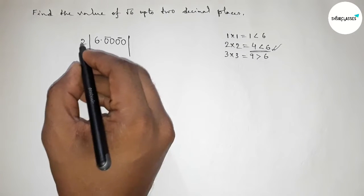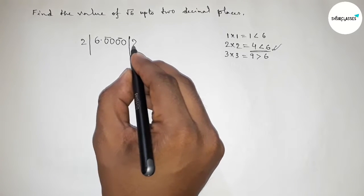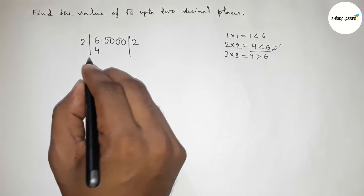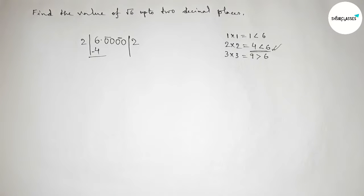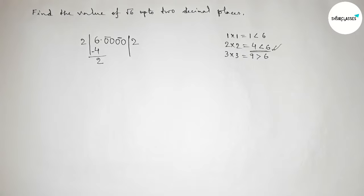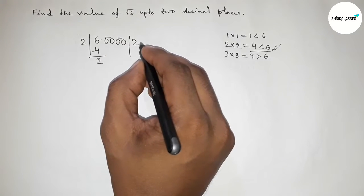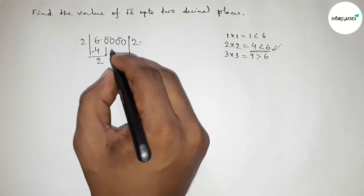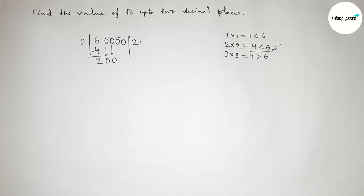So first putting here 2. Taking 2×2=4, now subtracting from 6, we get 2. This decimal point will be placed here. Now write down the first pair of zeros and draw a division line.